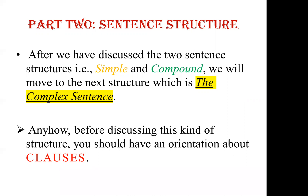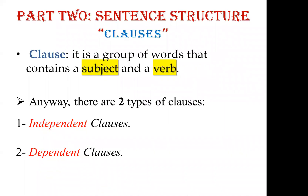We need some orientation about clauses: what are clauses and how many types do we have in English? A clause is a group of words that contains a subject and a verb. A clause is different from a phrase — it must have both a subject and a verb. There are two types of clauses: the independent clause and the dependent clause.